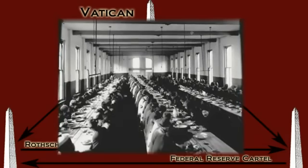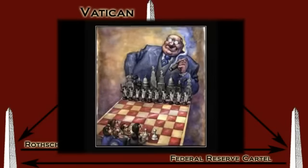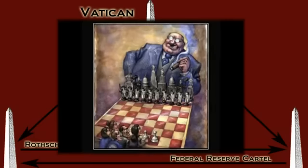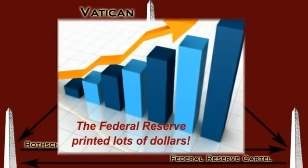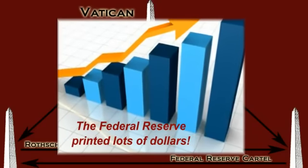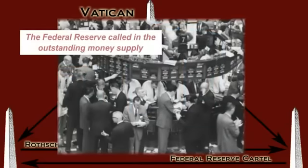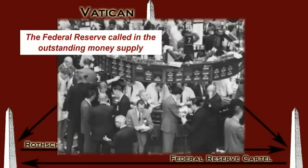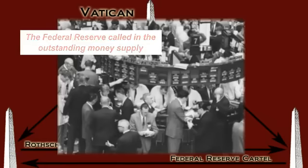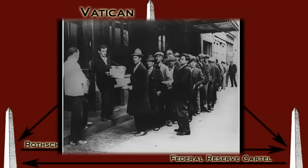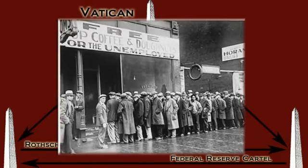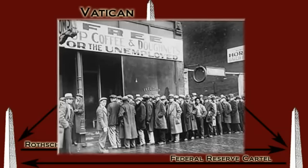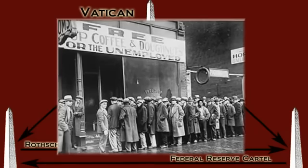The international bankers now had a streamlined machine to carry out their private agendas. Between 1914 and 1919, the Fed doubled the money supply, which led to extensive loans to small businesses and the public. Then in 1920, the Fed called in the remaining outstanding money supply, which resulted in panic and loans being called in. This led to bank runs and bank failures. Over 5,400 competitive banks not within the Federal Reserve banking system collapsed. The Fed sucked these banks up in a hurry, furthering their sphere of influence and power.